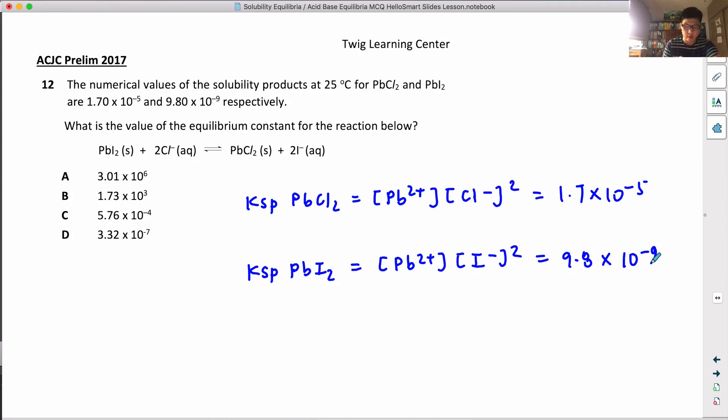So if you ask for the equilibrium constant for this reaction, Kc equals - so you ignore the solid - you're just going to be I minus squared divided by Cl minus squared.